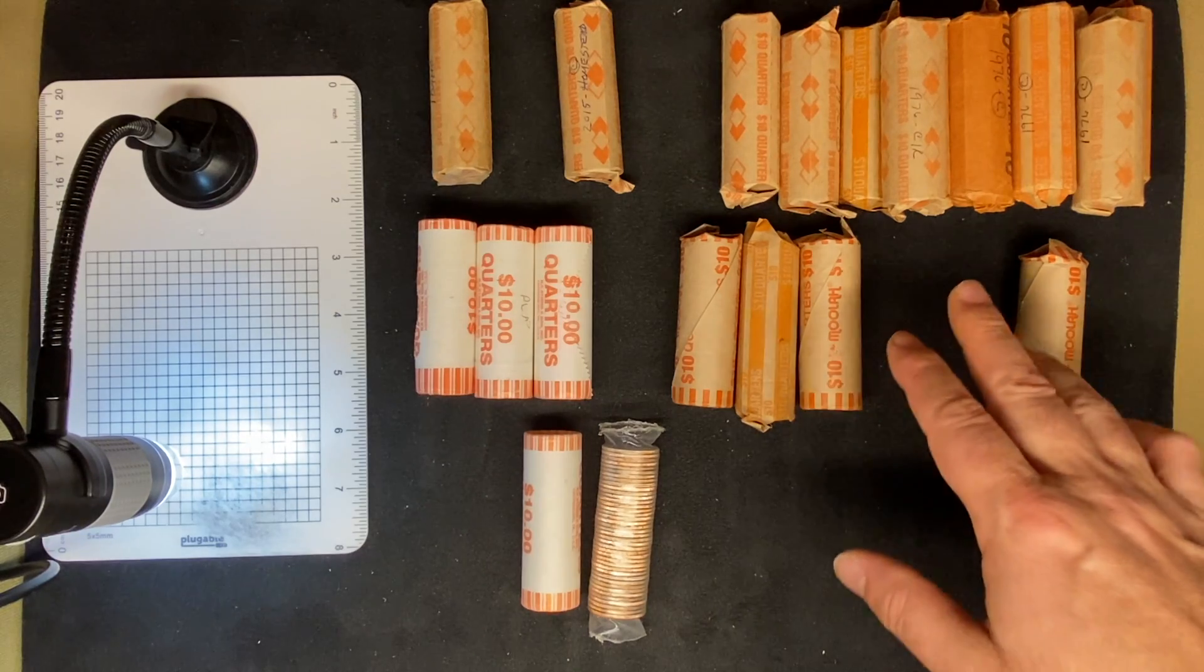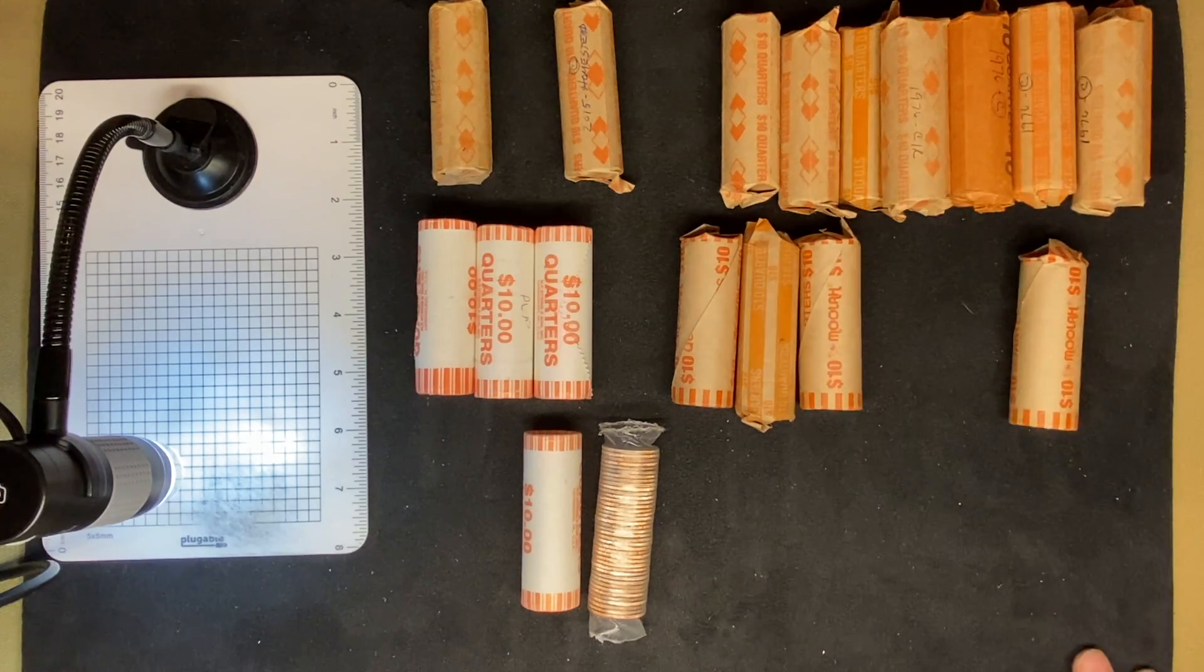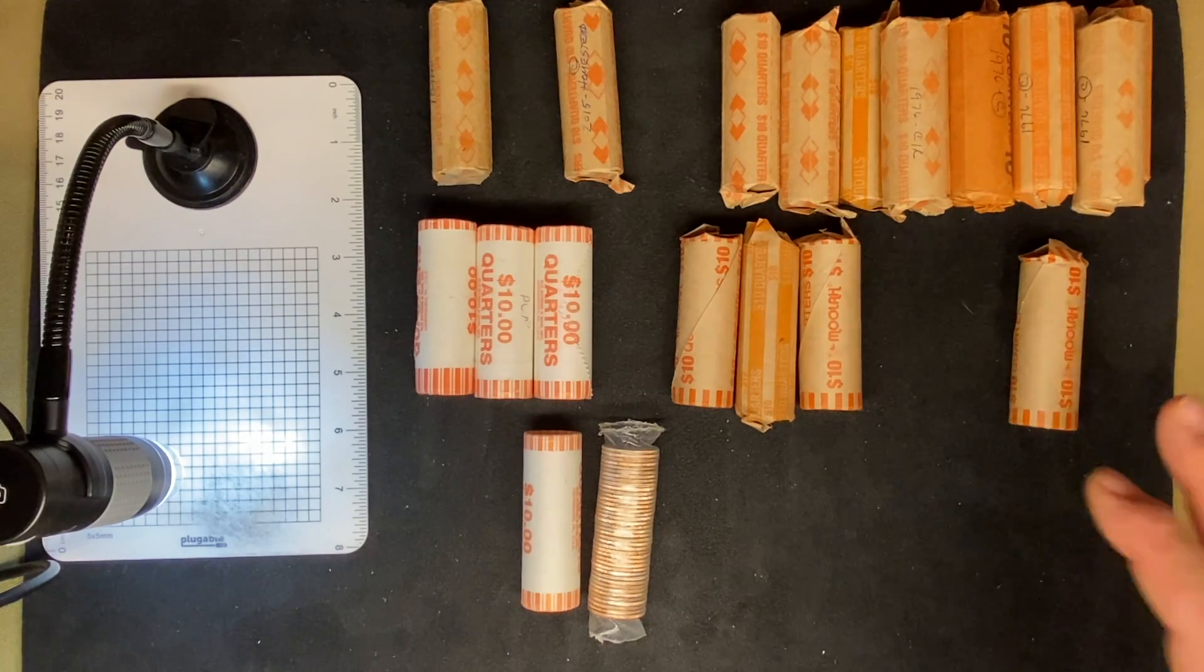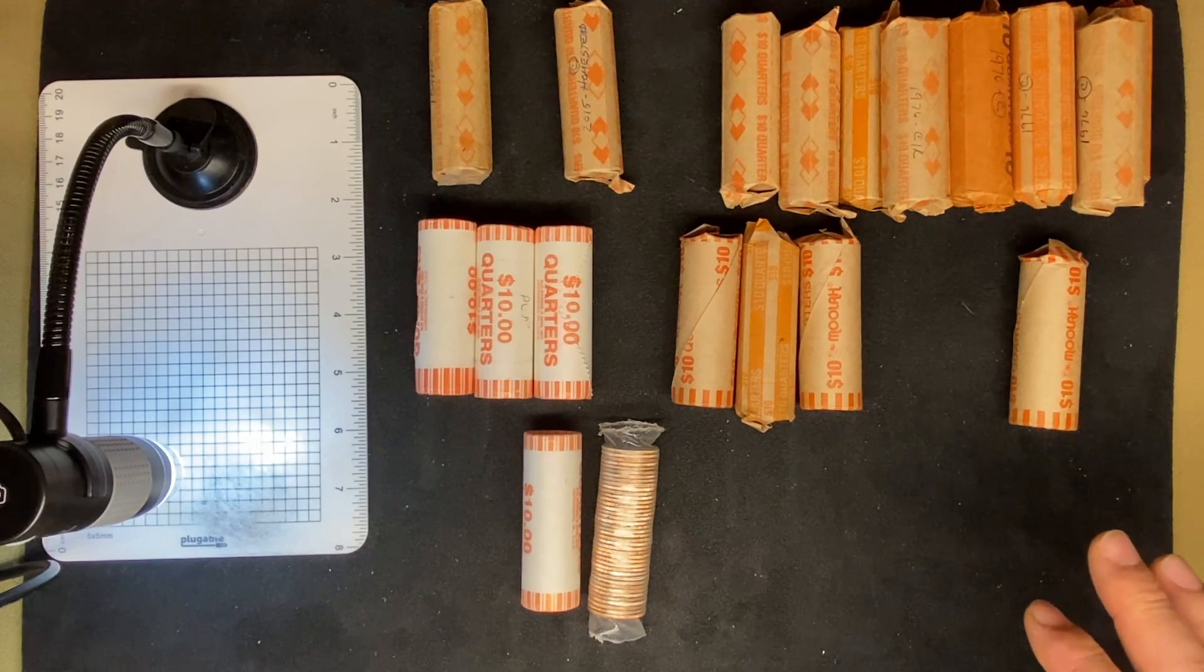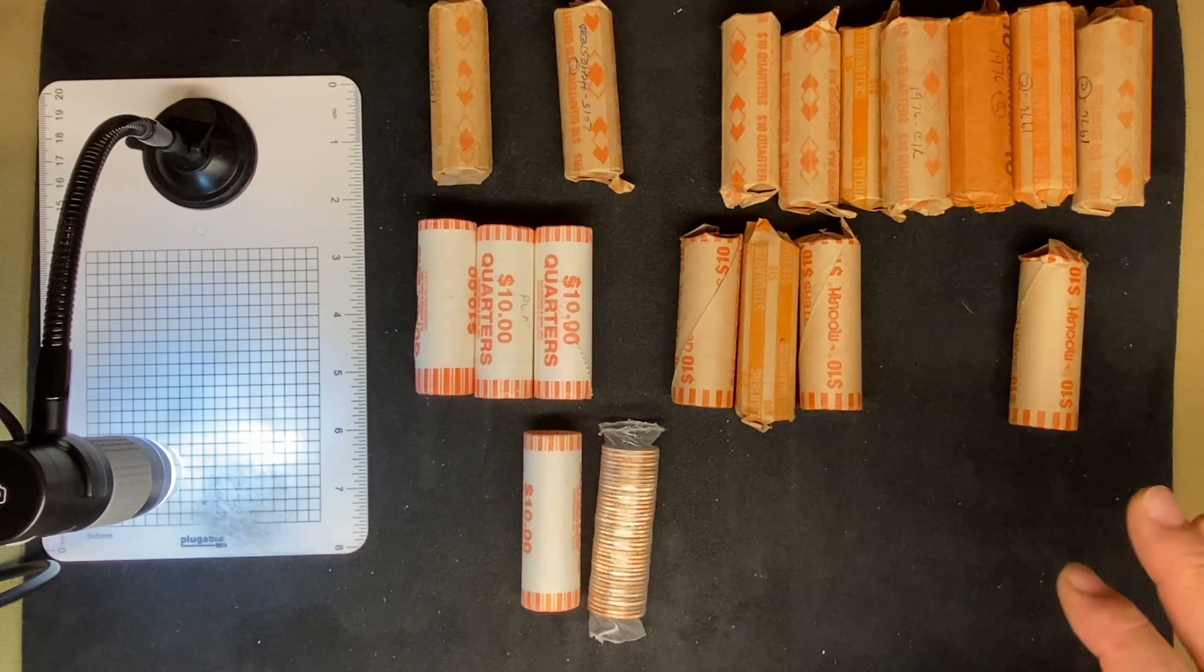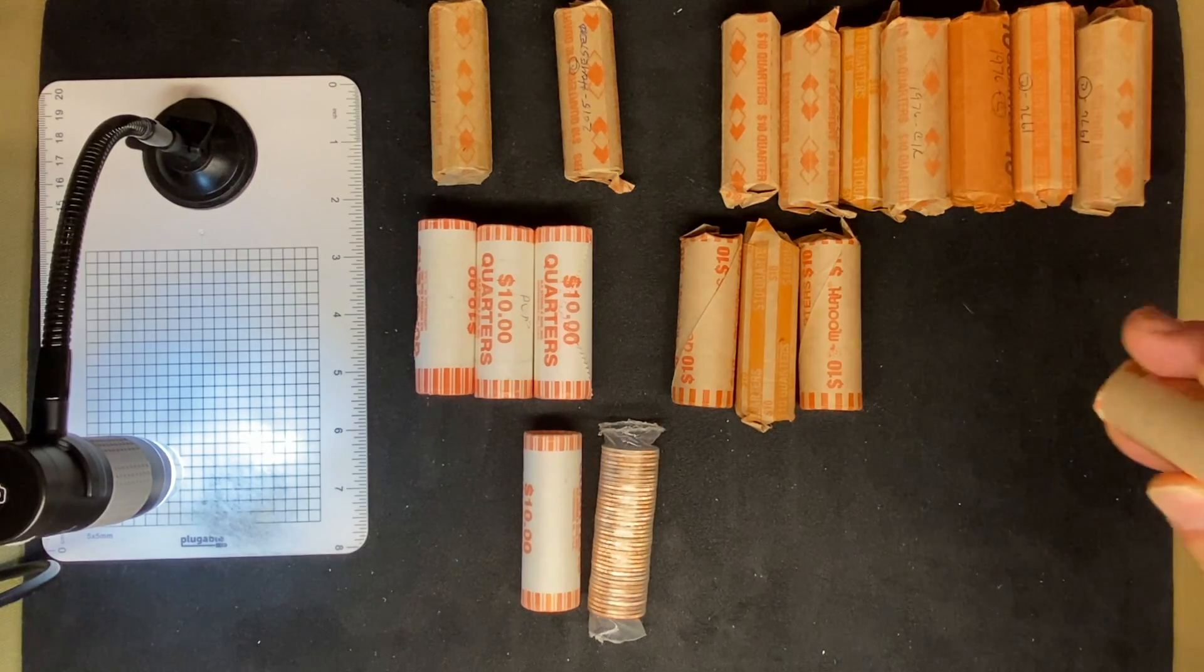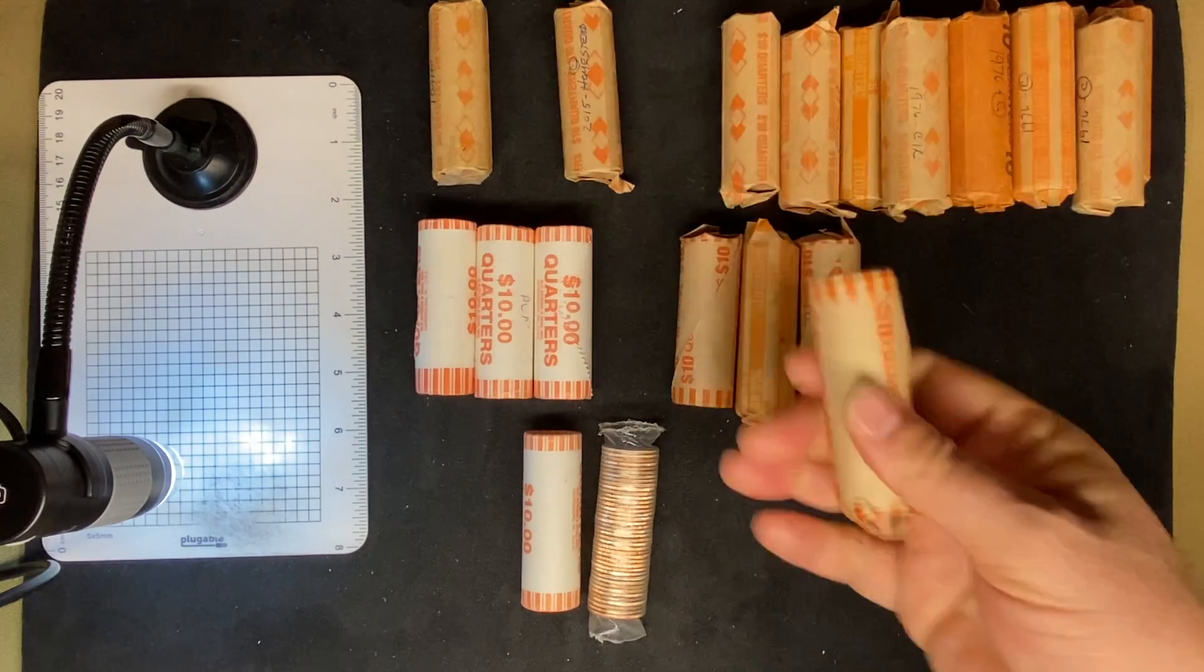So we have what appears to be 11 rolls of bicentennials, if the wording on the outside of the wrappers is to be believed. We are going to be looking for a DDO on those bicentennials. I'll probably pull out a roll of the best looking ones. We have a roll here of 2020s, at least the enders are 2020. So we're going to search that for a W.